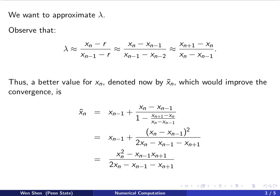Therefore, a better value for Xn, and now we denote it by Xn tilde, which would improve the convergence, is the following. We take the expression at the previous page, that's Xn minus 1 plus, with the numerator over the denominator 1 minus lambda. And now we plug in the expression for lambda.